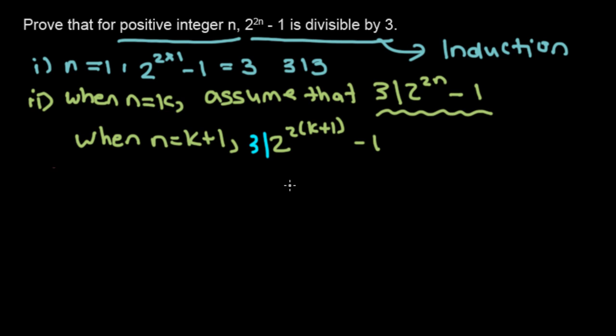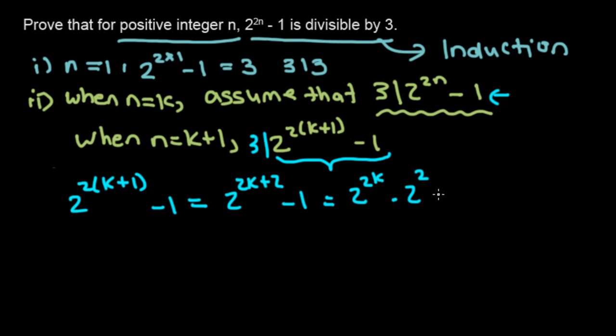So we're going to rewrite this side so that we use this thing right here to show that it's divisible by 3. So first, if we just rewrite this, 2 to the k plus 1 minus 1 is, when you expand this out, 2 to the 2k plus 2 minus 1 equals 2 to the 2k times 2 to the 2 minus 1.